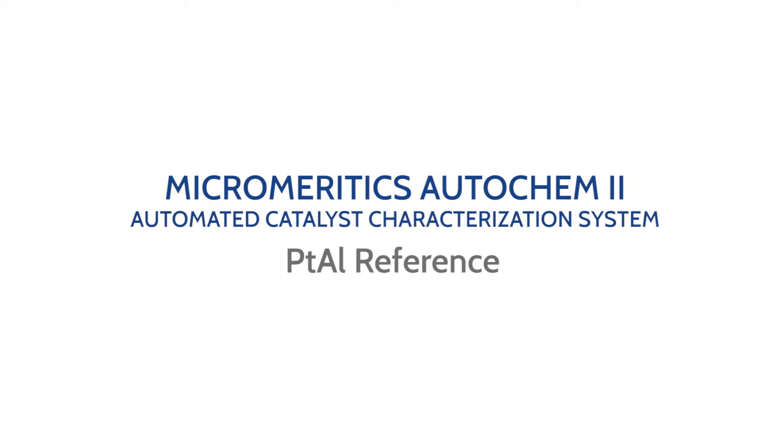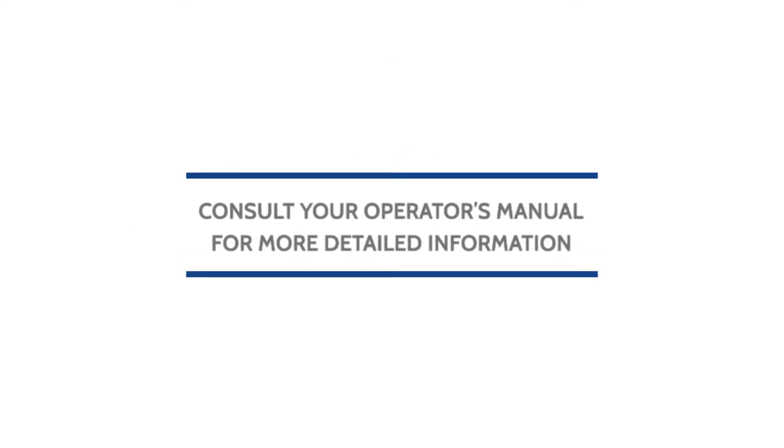This video will show how to run a carbon monoxide pulse chemisorption analysis with the platinum alumina reference material on the MicroMeritics AutoChem 2 automated catalyst characterization system. Remember to always consult your operator's manual for more detailed information.